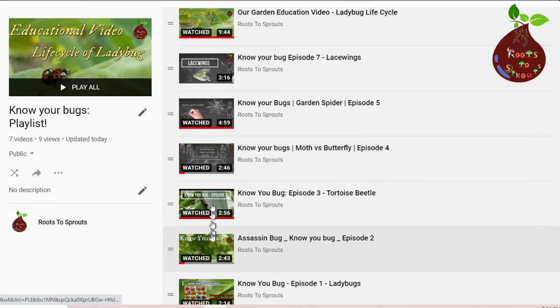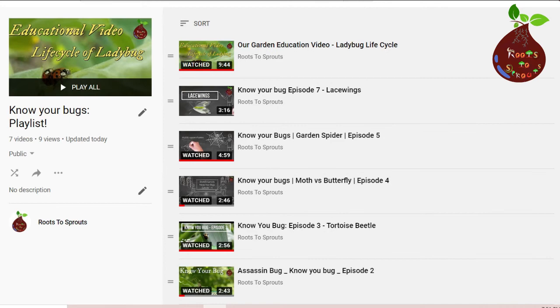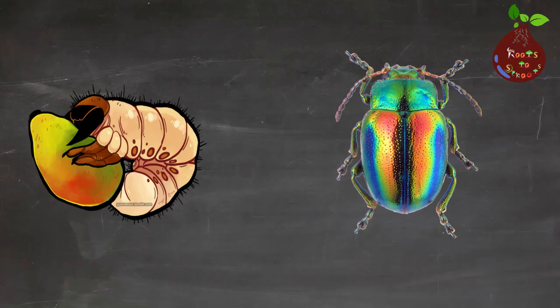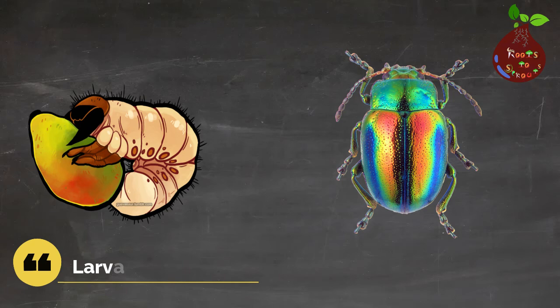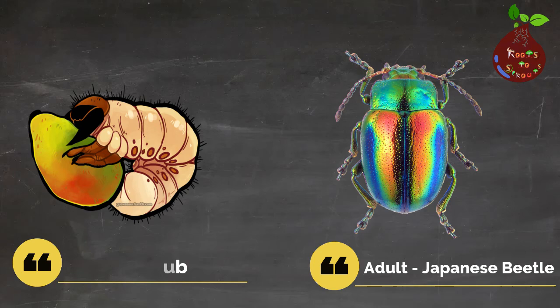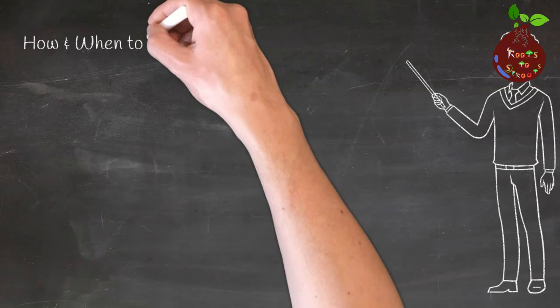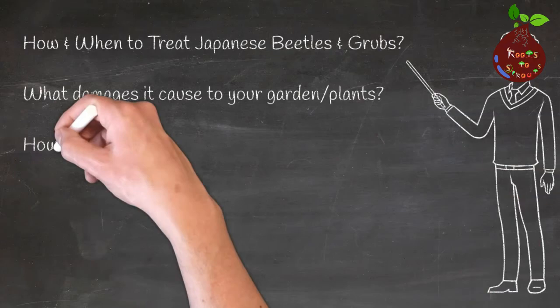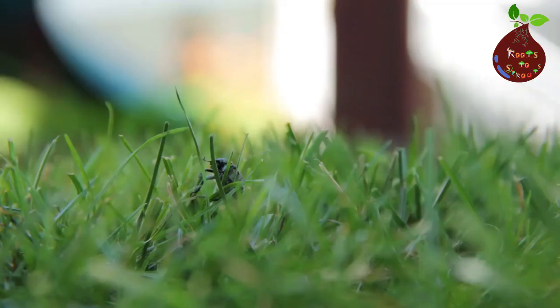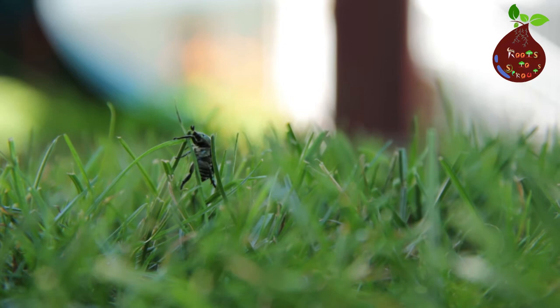Hello and welcome to Roots to Sprouts. In our 'Know Your Bugs' series, today we are covering a bug that is called a grub in its larva stage and a Japanese beetle as an adult. In this episode we are going to address three things: how and when to treat these bugs, what damages they cause, and how to control them.